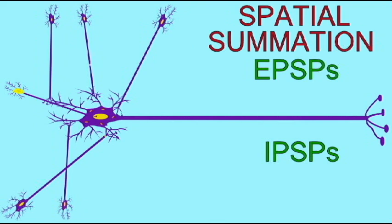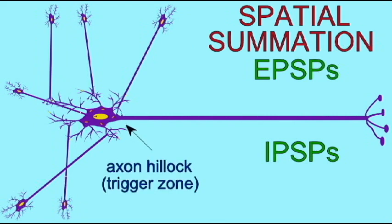There is only one section of the post-synaptic neuron, however, which can generate an action potential. That is an area at the base of the axon known as the axon hillock, also known as the trigger zone.